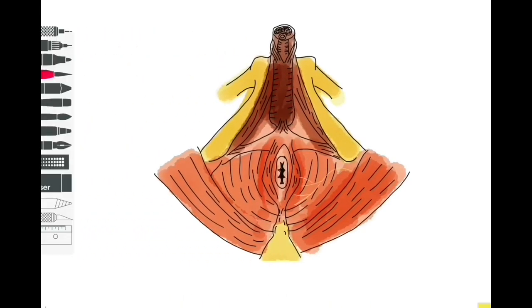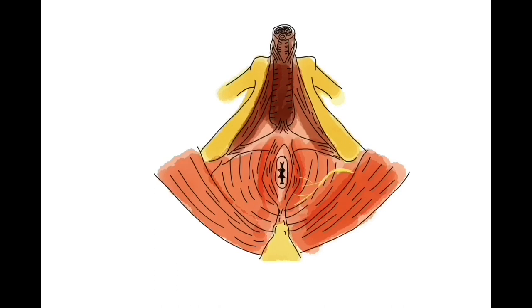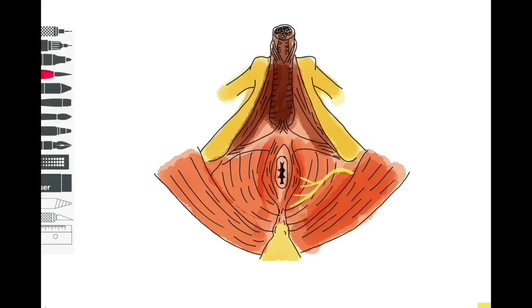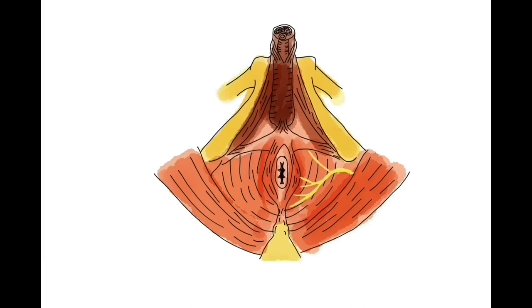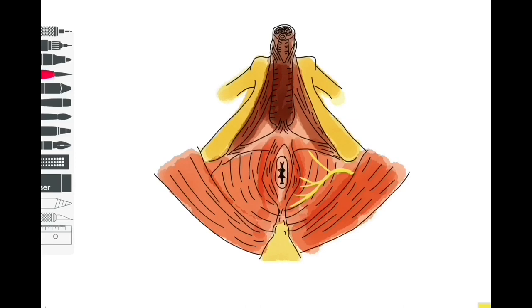Let's now take a fresh look at this diagram focusing specifically on the pudendal nerve. While we can see the branches of the pudendal nerve emerging on this diagram of the male perineum, let's recap about the pudendal nerve more generally. It is the major somatic nerve of the perineum and it originates from the ventral ramus S2 to S4.